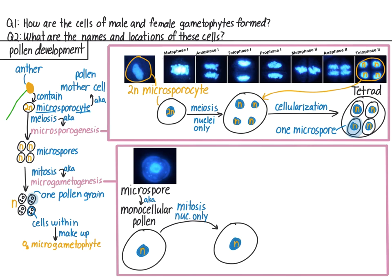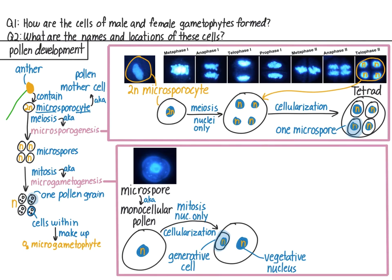Monocellular pollen undergoes mitosis, but again only the nucleus divides, resulting in one cell with two nuclei inside of it. The smaller nucleus is the generative nucleus, which undergoes cellularization to form its own cell, called the generative cell. The larger nucleus is the vegetative nucleus, and controls the vegetative cell, which is basically everything in the pollen grain except the generative cell. So the pollen grain is now made of two cells — the generative cell within the vegetative cell — so we now call it bicellular pollen.